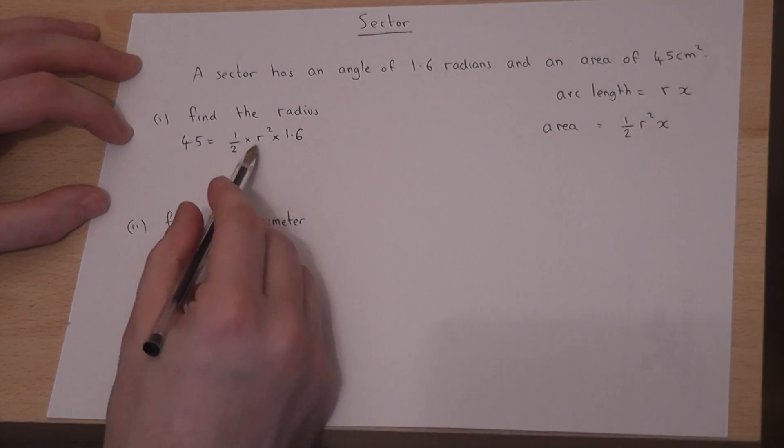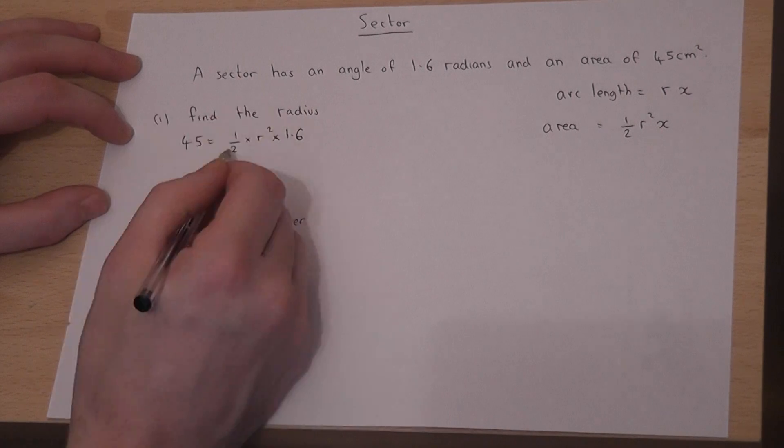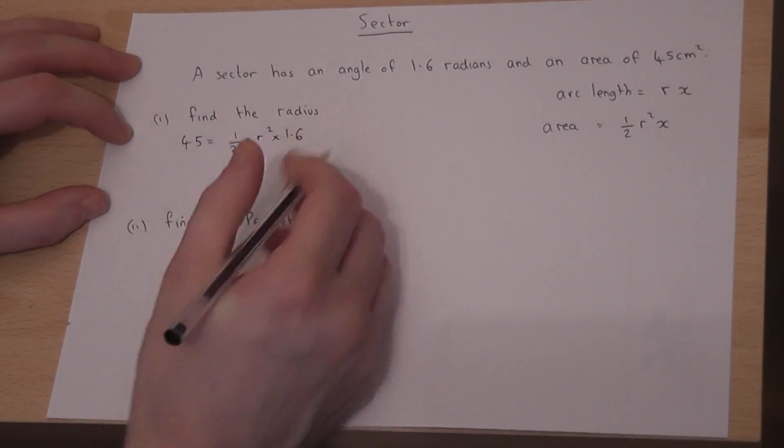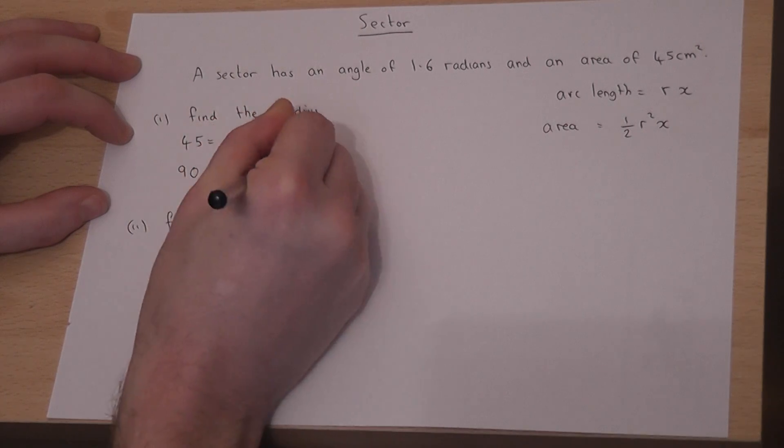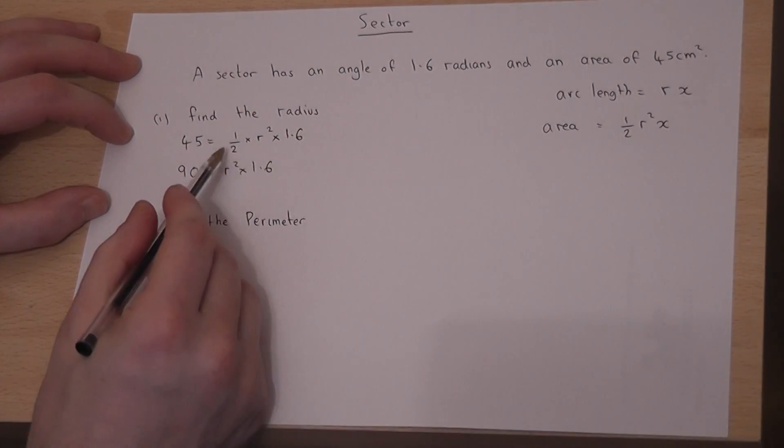I must solve this for r. If I begin by multiplying by 2, I get 90 equals r squared times 1.6.